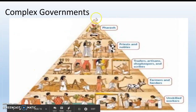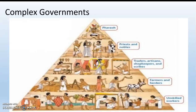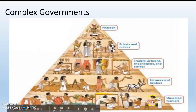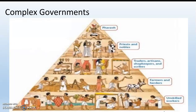We've got complex governments. At the top is the king. Under the king are priests and nobles. Under them are traders, artisans — like a blacksmith or a tailor — shopkeepers, and scribes, people who write things down. Under them are farmers and herders. Under them are unskilled workers. And at the bottom are slaves. This society buys and sells slaves and captures slaves in war. Not all slaves were Black people — slavery has been around for a really long time, and we'll talk more about that as we move on.